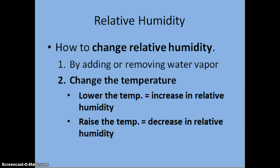Two ways that relative humidity changes: the first is by the addition or removal of water vapor from the air. Ways that we add water vapor to the air include evaporation and transpiration. Ways that we remove water vapor from the air include rain or other forms of precipitation falling from the sky.